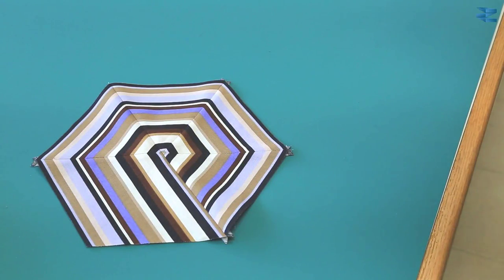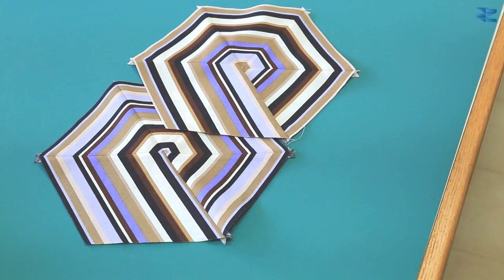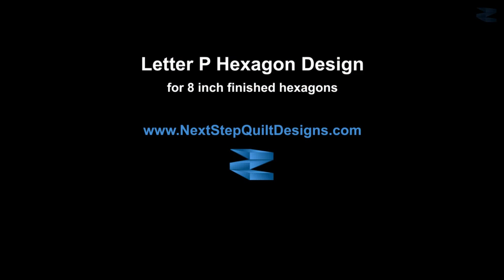This is the hexagon that we just worked through. And here is the other letter P hexagon that was cut at the same time. Thank you for joining me for this edition of Next Step Quilt Designs. I hope you enjoyed learning how to make the letter P hexagon. It's so much easier than you probably thought. Check out my channel for more hexagon designs and other tutorials.